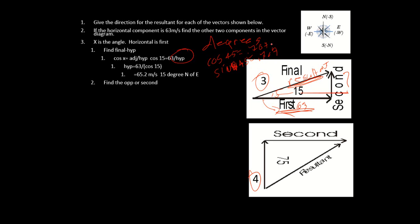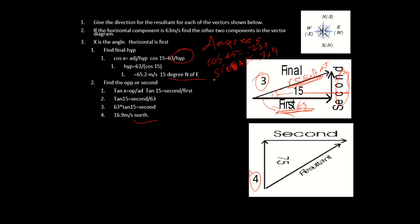Now find the opposite side — the second component. I can use tangent: the tangent of the angle (which is 15 degrees) is opposite over adjacent. So tangent of 15 equals the opposite over 63. Rearranging, the second component is going to be 16.9 meters per second. Notice I'm doing vectors — direction matters, so it's simply directly north.